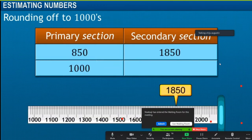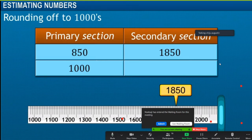Similarly, 1,850 is closer to 2,000 compared to 1,000, hence it is rounded off to 2,000. Numbers 1 to 499 are closer to 0 compared to 1,000, so these numbers are rounded off to 0. Numbers 501 to 999 are rounded off to 1,000. The number 500 is also rounded off to 1,000.